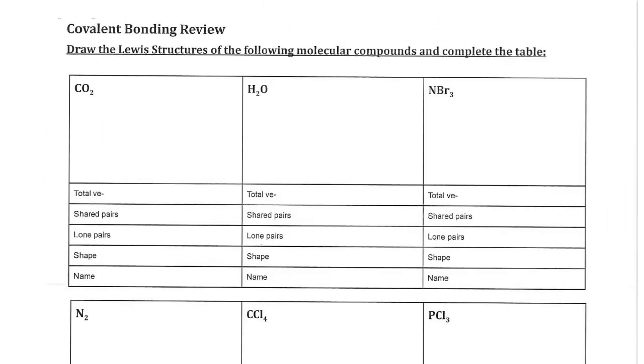On to covalent bonding. So in ionic bonding, an electron was transferred and then the atoms stuck together like magnets. Now with covalent bonding, orbitals are going to overlap and then share an electron, and that's what will keep our atoms together. This is a much stronger type of bond.